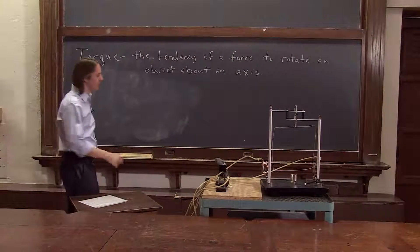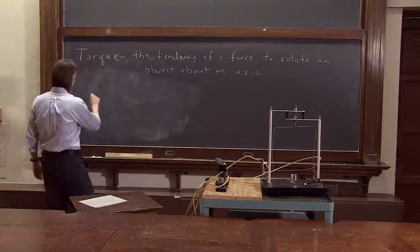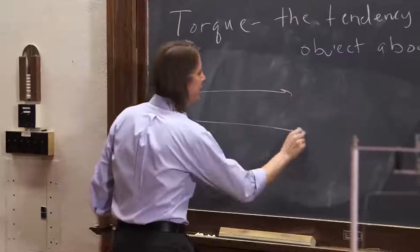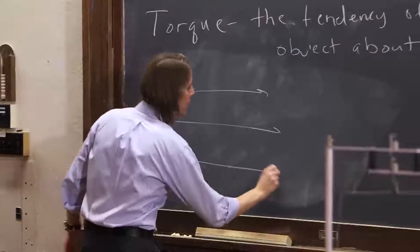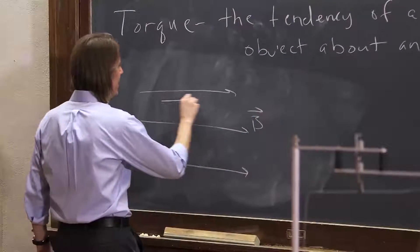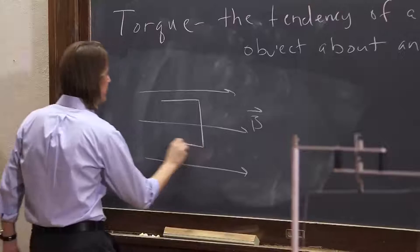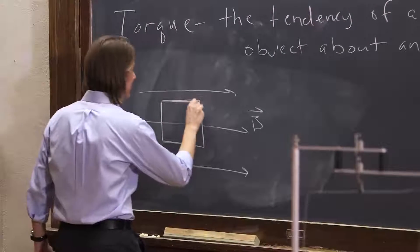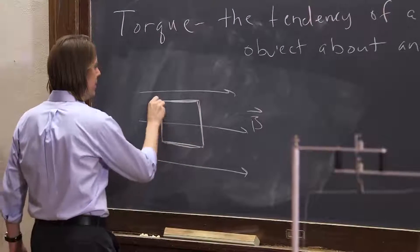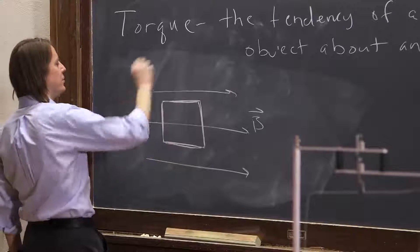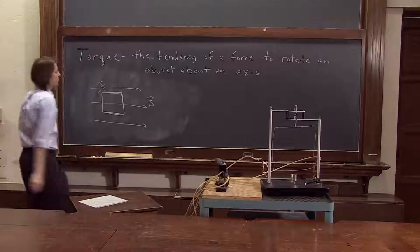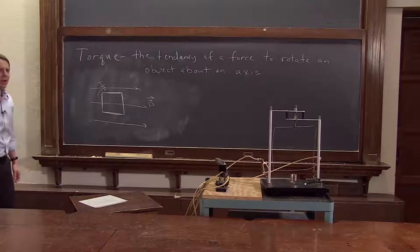Let's look at this torque in a few more situations. Before we had the B field to the right and we had the square sitting like this in the B field. Let's just think, what if we reverse the direction of the current? What if the current went that way?